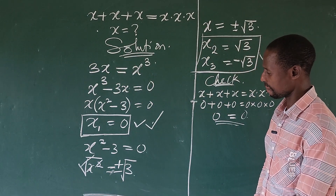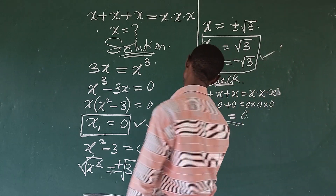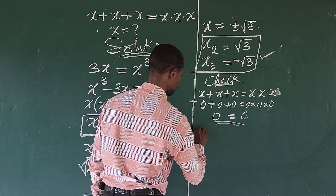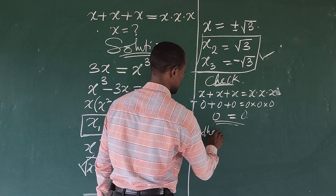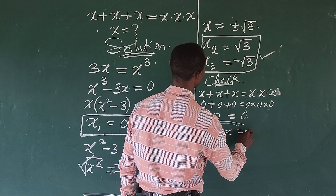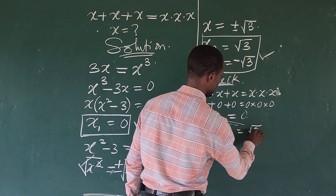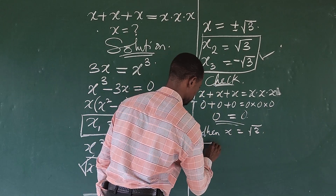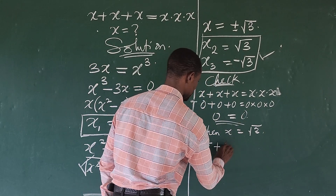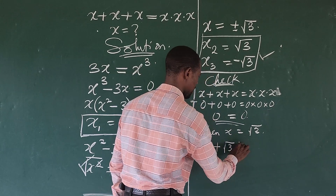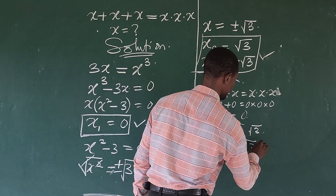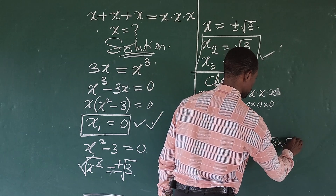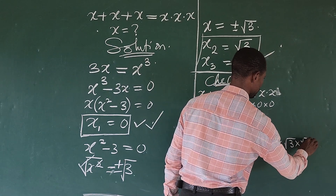This shows that the first answer is correct — we satisfied the original equation. Now let's check x2, which is root 3. When x is equal to the square root of 3, this gives us the square root of 3 plus the square root of 3 plus the square root of 3 on the left, and the square root of 3 times the square root of 3 times the square root of 3 on the right.